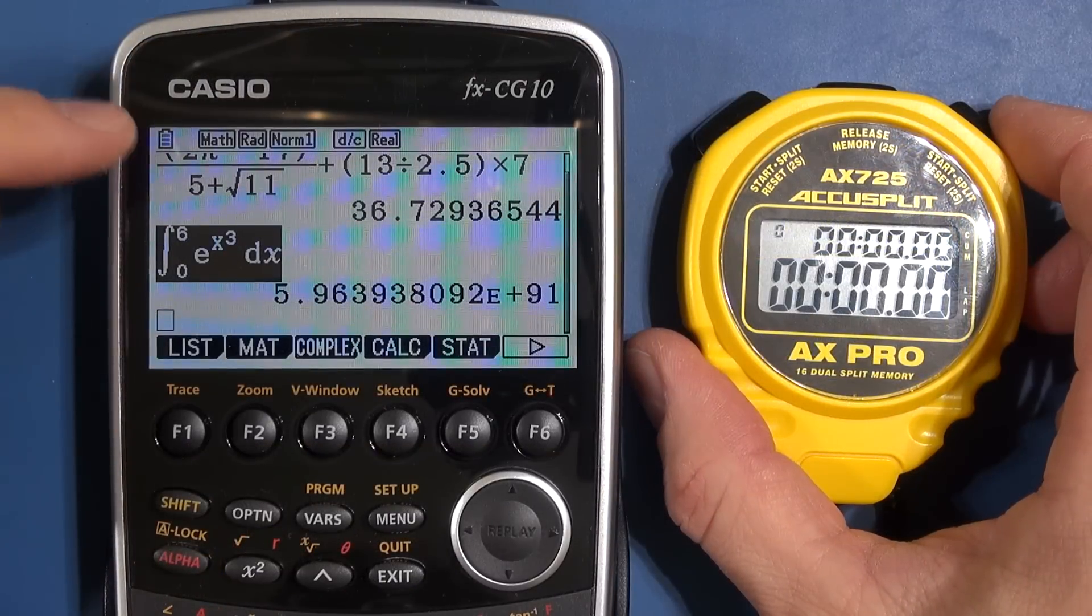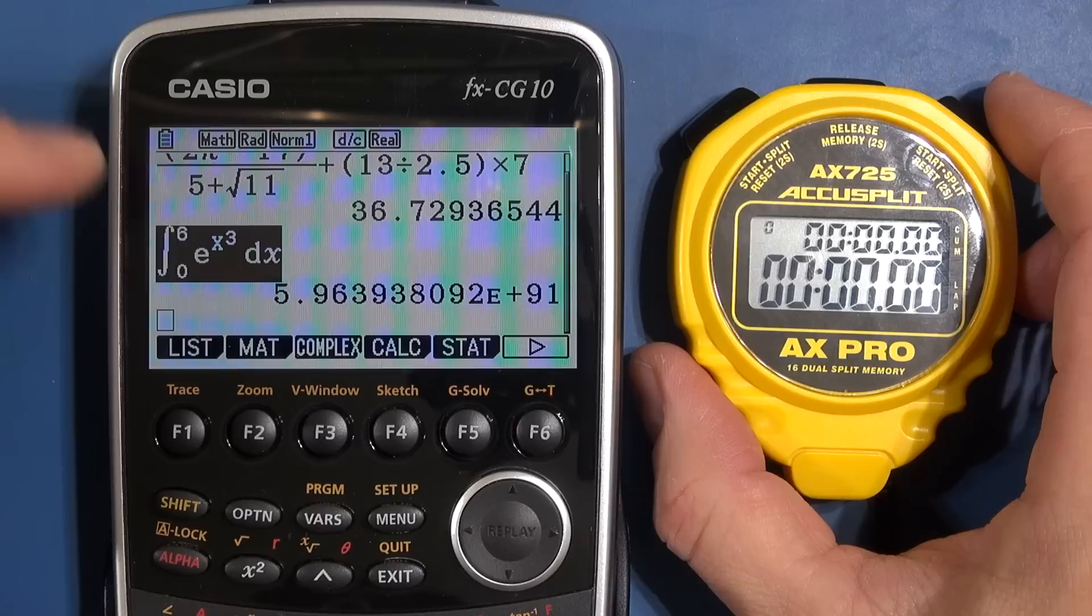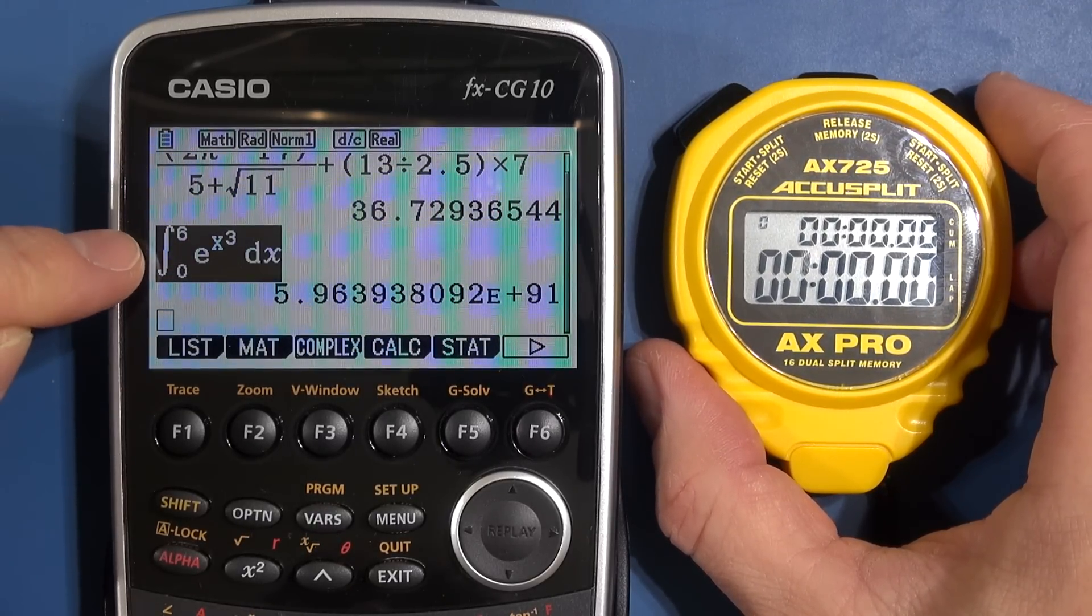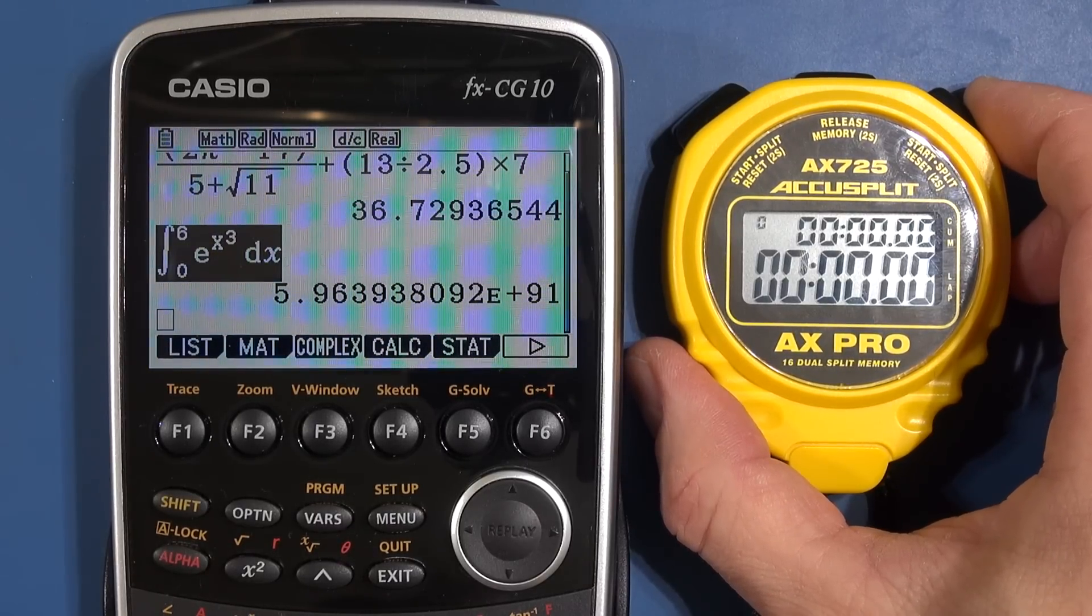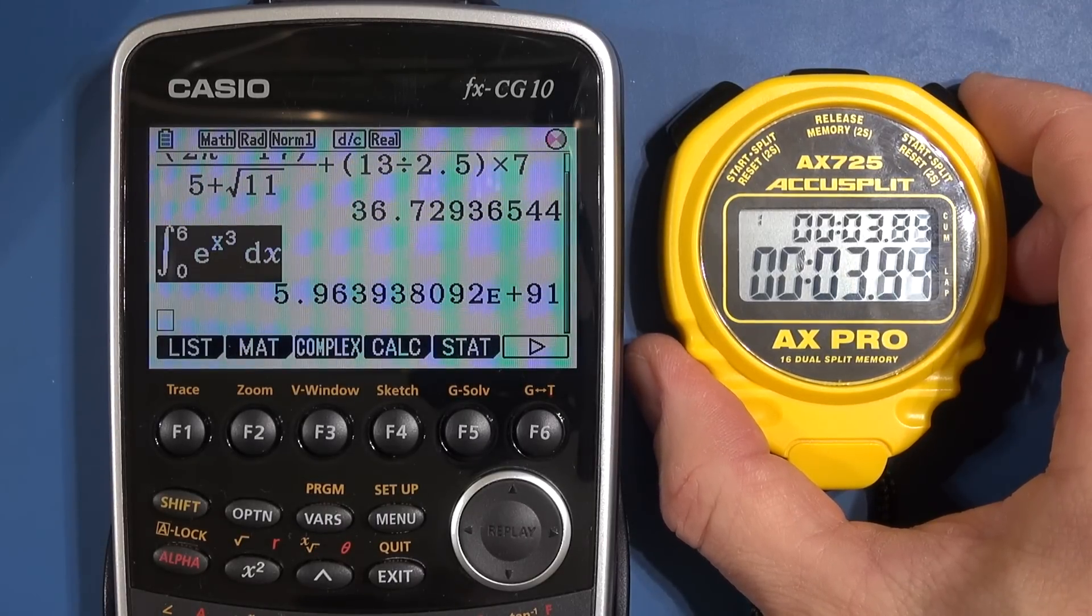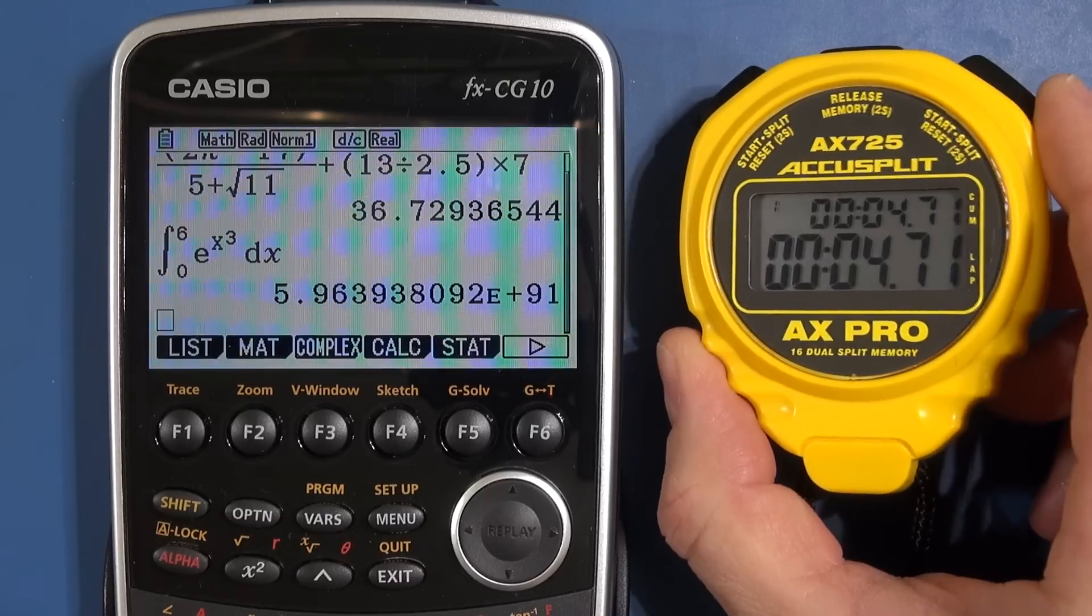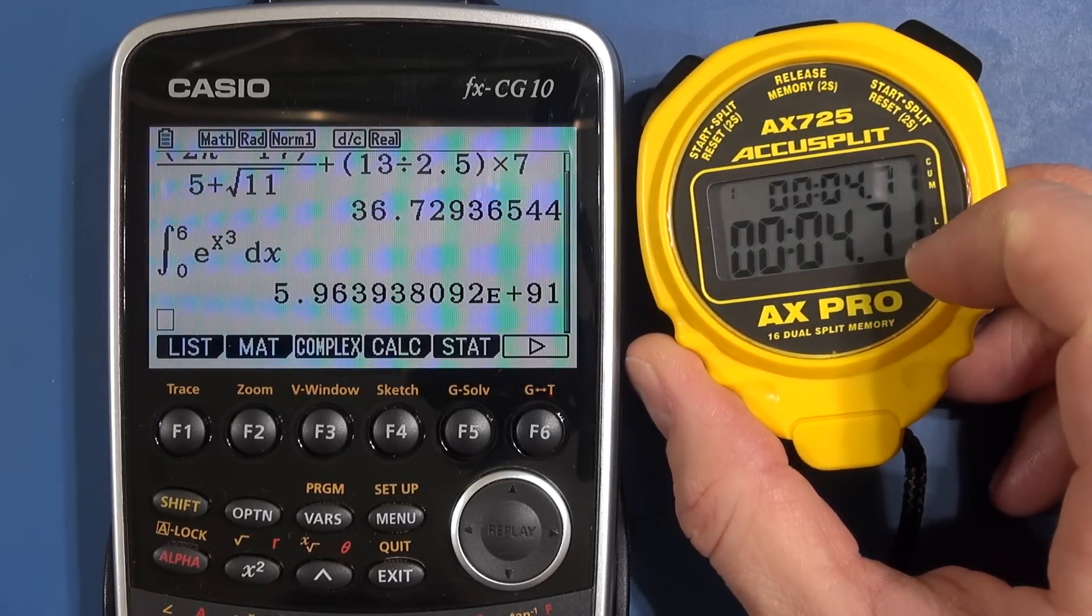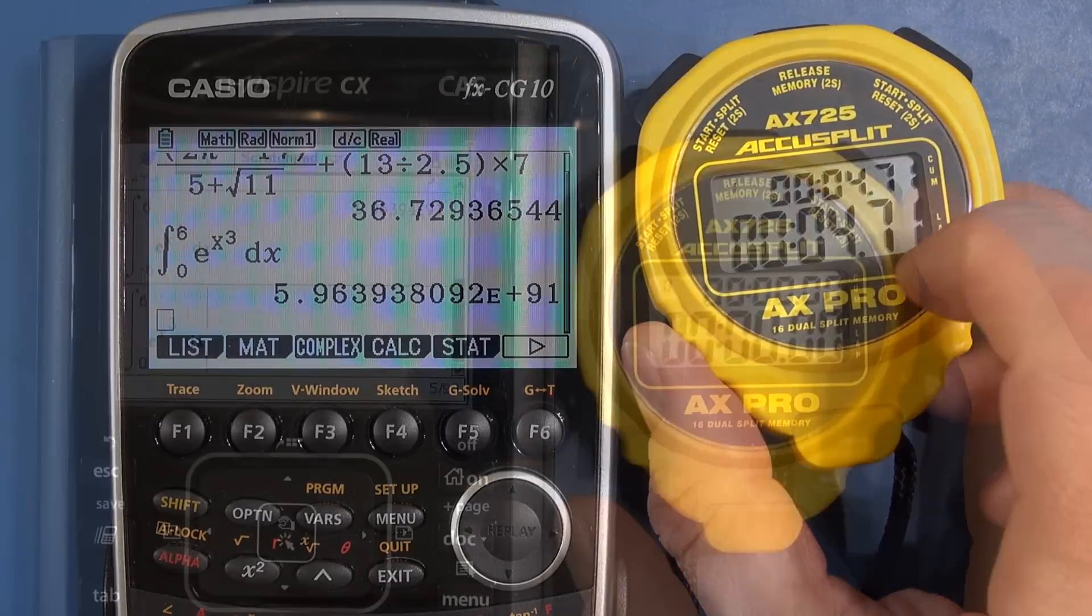Right so now we have the other Casio, the Casio FX CG10. This is obviously the more fancy color version of the previous Casio. I've got the function highlighted. I'm going to push the execute button and three, two, one. Thinking. And that's a little bit faster. It's close. I said I'd round down but that's 4.7 seconds. So I'm going to note that it's about 4.5.